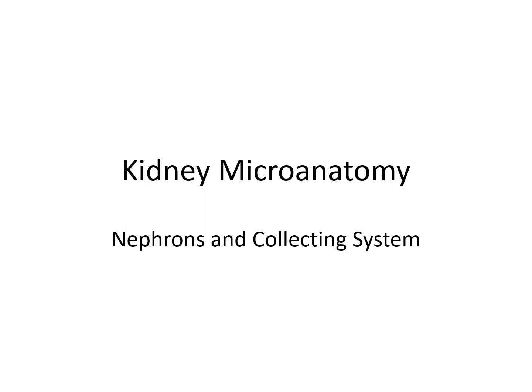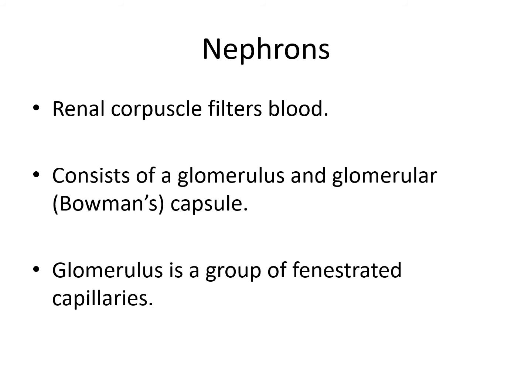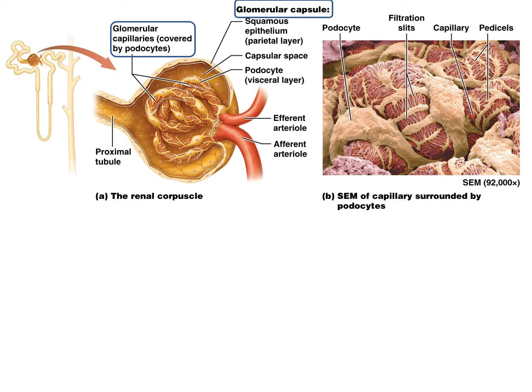We'll spend a good portion of time discussing kidney microanatomy and the nephrons, because in subsequent lectures we're going to discuss the actions and functions of the nephrons and the collecting cells. The nephron itself filters the blood and modifies the fluid that passes through the renal tubules. The renal corpuscle filters the blood and is composed of the glomerulus and the glomerular capsule, also known as Bowman's capsule. The glomerulus is a group of fenestrated capillaries — meaning they are porous.